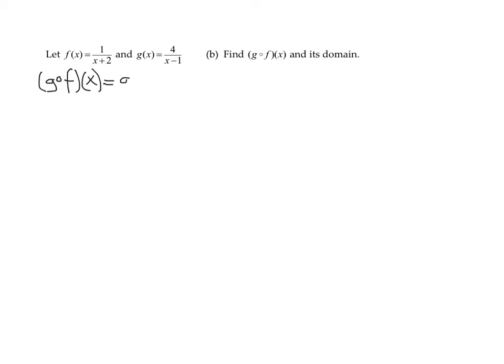Remember, it's g at f of x. So we're going to get rid of the inner quantity first. So that means I have to find g at, well, what is f of x? It's 1 over x plus 2.